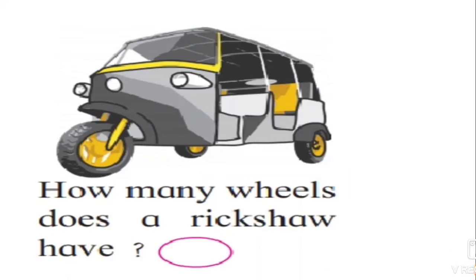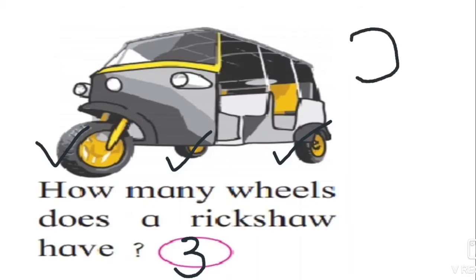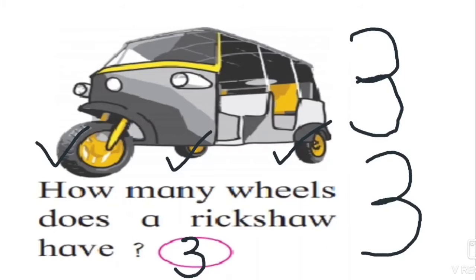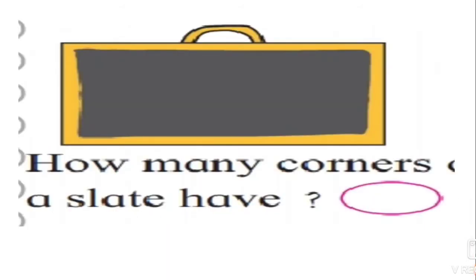See this picture — what is this? This is an auto rickshaw. How many wheels does a rickshaw have? A rickshaw has three wheels: one, two, three. Let's write three in this empty space. How to write three — first make a half circle, and then make another half circle like this.